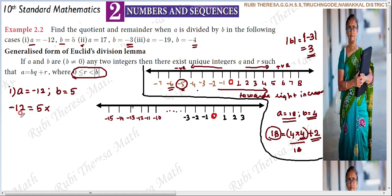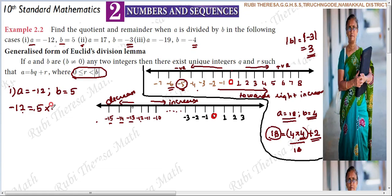For negative integers on the number line, values decrease towards the left. Minus 13, minus 14, minus 15, minus 16, minus 17 are all less than minus 12. So if we need a multiple of 5 that is less than minus 12, we check: 5 into 3 is 15, so minus 15 is less than minus 12. So the quotient takes a minus sign.